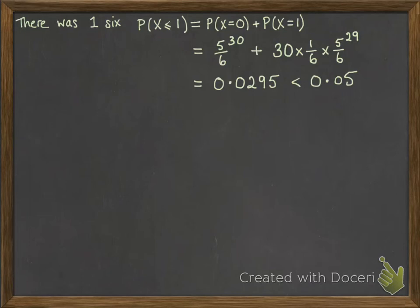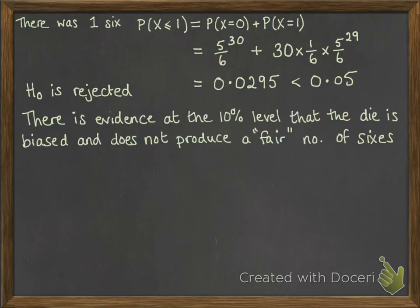so the chances of it happening fall in the unlikely category, and in that case, we say that we are going to reject the null hypothesis, and there is evidence at the 10% level that the die is biased and does not produce a fair number of sixes.